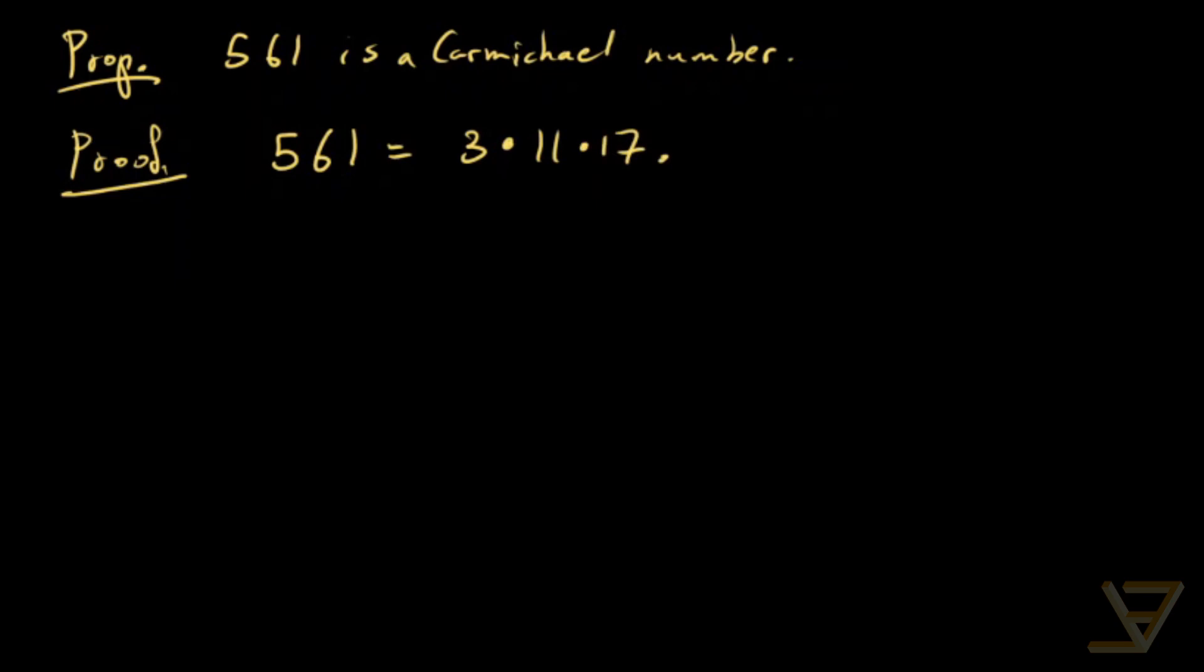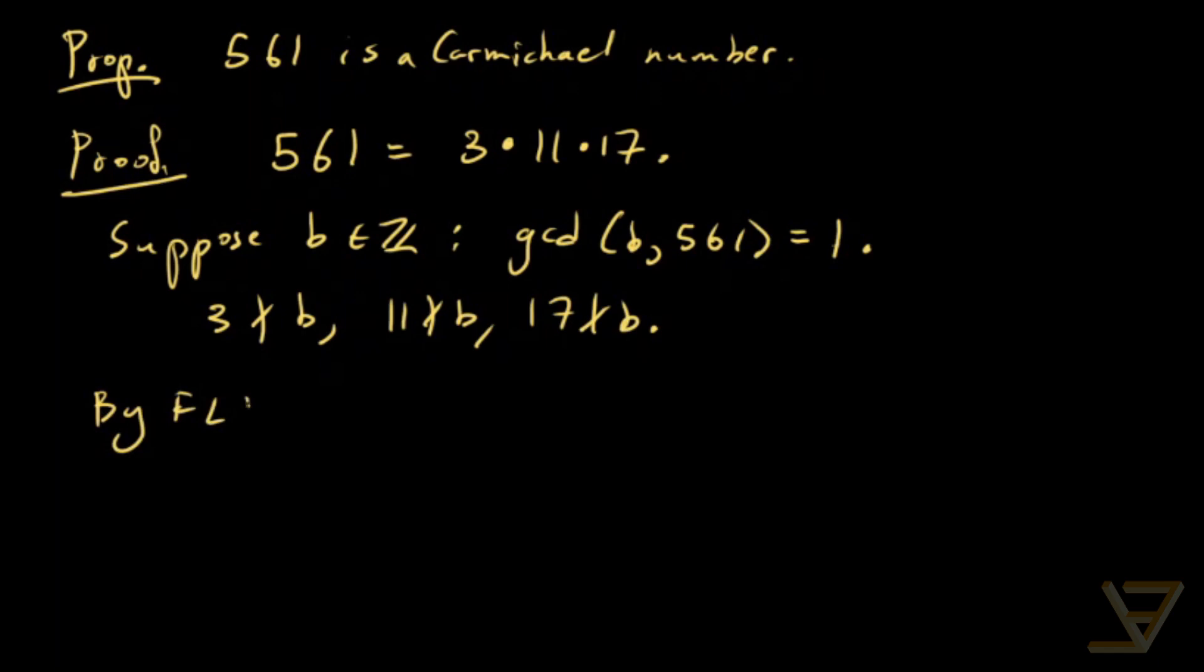So suppose b is an integer such that gcd(b, 561) = 1. Then that means 3 doesn't divide b, 11 doesn't divide b, and 17 doesn't divide b. So by Fermat's Little Theorem, we find that b² ≡ 1 (mod 3) and b^10 ≡ 1 (mod 11).